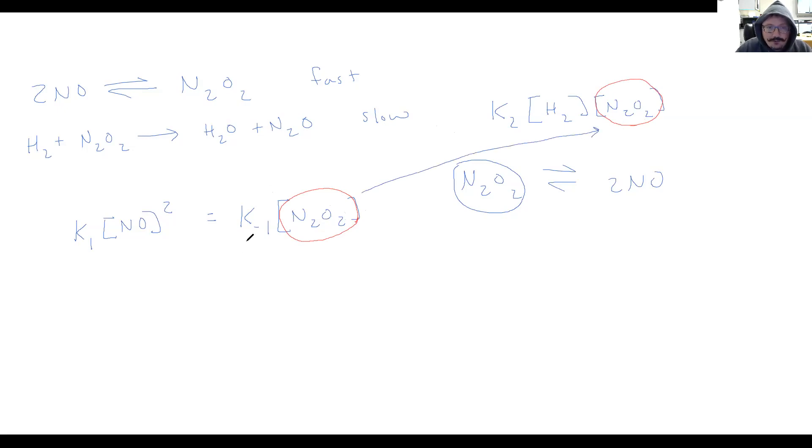So all I'm going to do for that is, if I want to isolate N2O2, I'm going to divide both sides by K to the minus one. So my concentration of N2O2 is going to be equal to K1 over K minus one times the concentration of NO squared. So I can take that value now and substitute it in for N2O2 in my slow step. So what that's going to look like is K1 times K2 divided by K minus one. We have H2 from that slow step. And then in the place of the N2O2, we're going to finish the substitution. That's going to be NO squared.